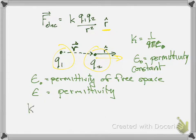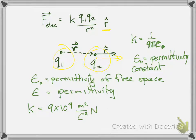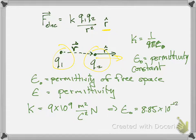The value of K for free space is 9×10⁹ N·m²/C². This also tells us that ε₀, the permittivity of free space, is 8.85×10⁻¹² C²/(N·m²).